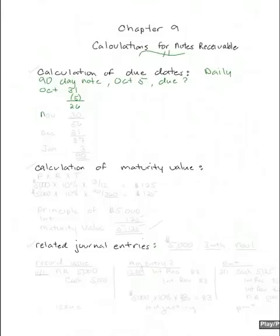In November, there are 30 days. So you can see, we have now gotten to 56. In December, there are 31 days. We have now gotten to 87. We only need to get to 90, and we need three more days. So the due date of this note will be on January 3rd.